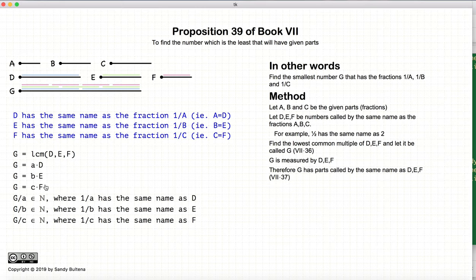Now since D, E, and F measure G, according to proposition 37, there are fractions G/A, G/B, G/C which are whole numbers, where the fraction 1/A has the same name as D, and 1/B has the same name as E, and so on and so forth. That's from proposition 37.